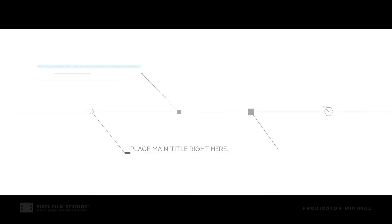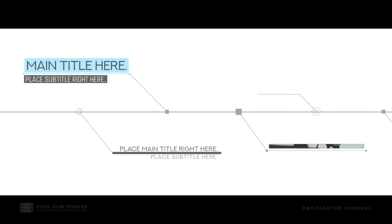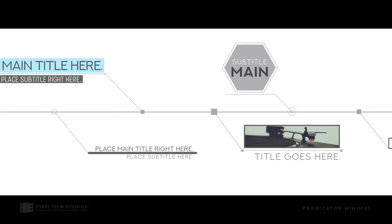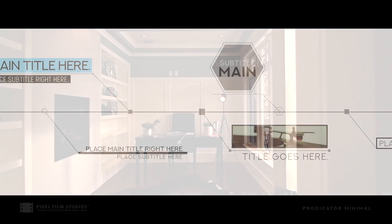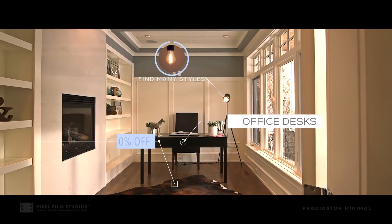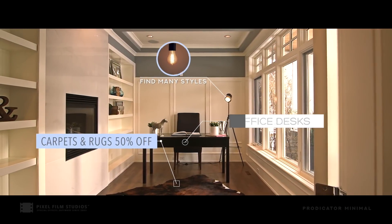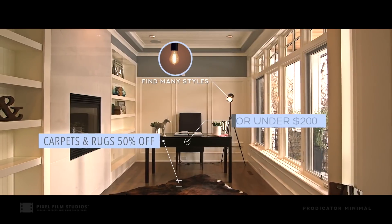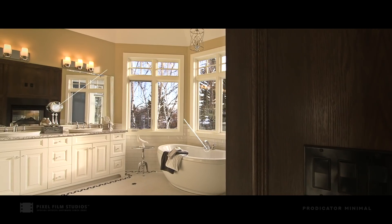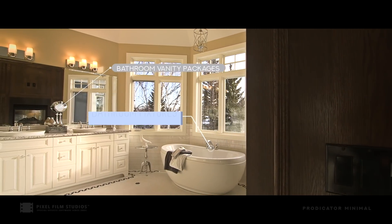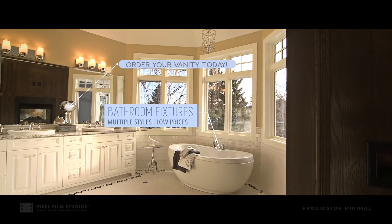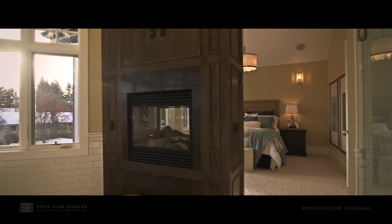Pixel Film Studios presents Prodicator Minimal, a package of cleanly designed line indicators that allows users to create minimal looking call outs. Prodicator Minimal allows video editors to insert line indicators on top of any media, creating credible parallax in 3D space using the on-screen controls.